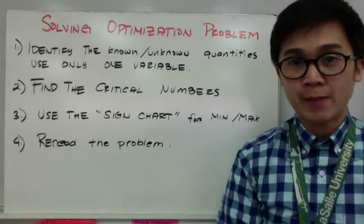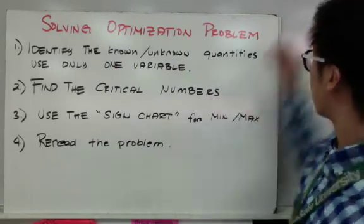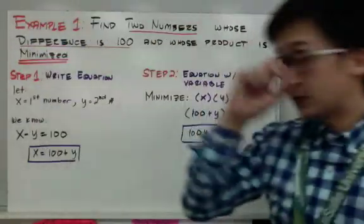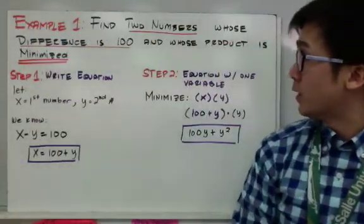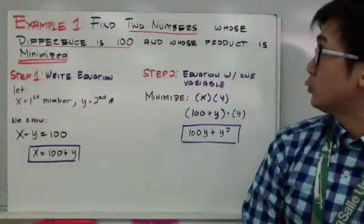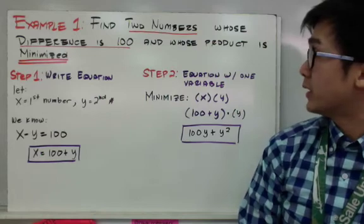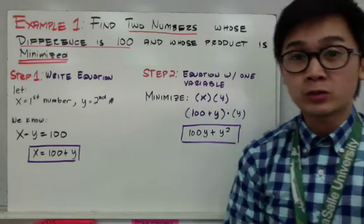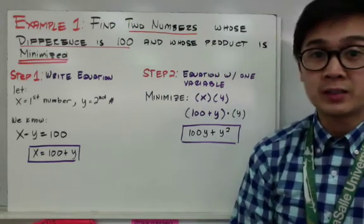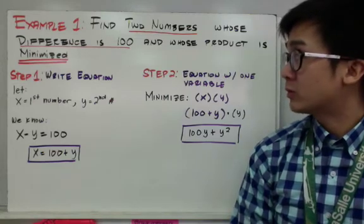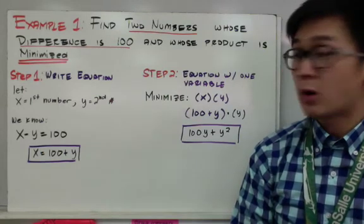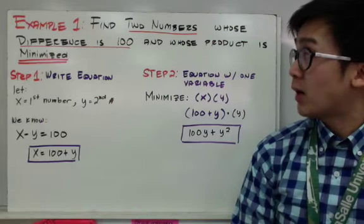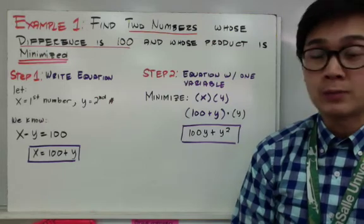So let's have our first example. We need to find two numbers whose difference is 100 and whose product is minimized. I'm going to show you some series of steps na pwede nyong tandaan para ma-organize ang pag-answer ng very simple optimization problem na tulad nito.